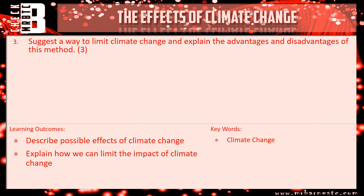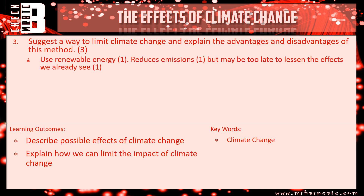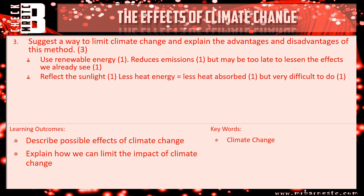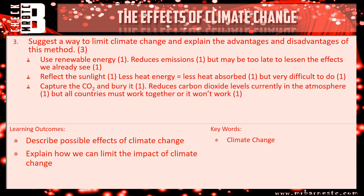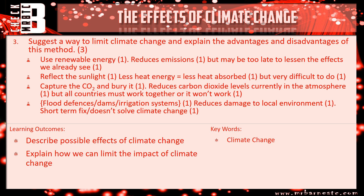Final question: suggest a way to limit climate change and explain the advantages and disadvantages. Renewable energy: reduces emissions — that's your advantage; however, it may be too late to lessen effects already seen. Reflecting sunlight: less heat energy hitting the earth — advantage; however, it's very difficult to do. Capturing and burying carbon dioxide: reduces CO2 levels in the atmosphere — advantage; however, all countries must work together or it won't work. Flood defences, dams, or irrigation systems: reduces damage to the local environment — advantage; however, it's a short-term fix and doesn't solve climate change.